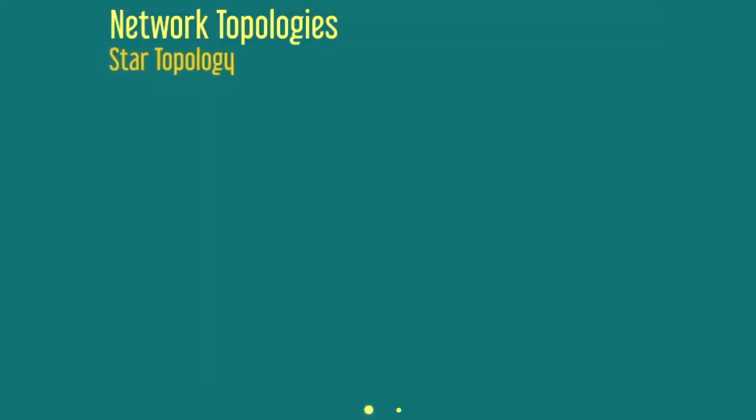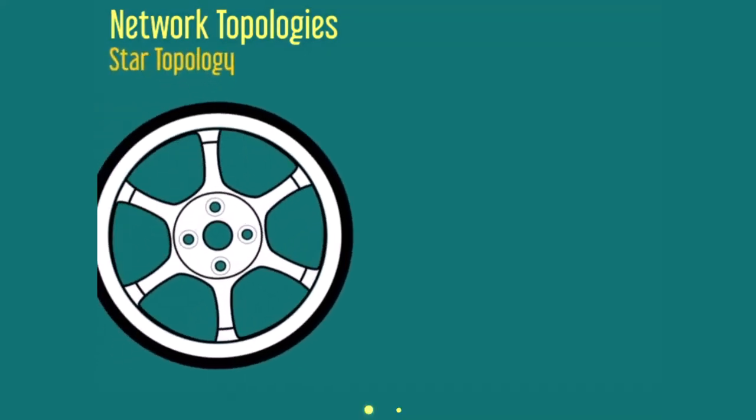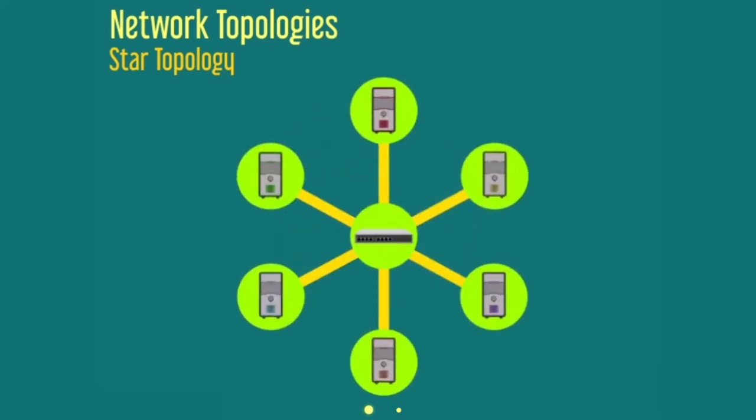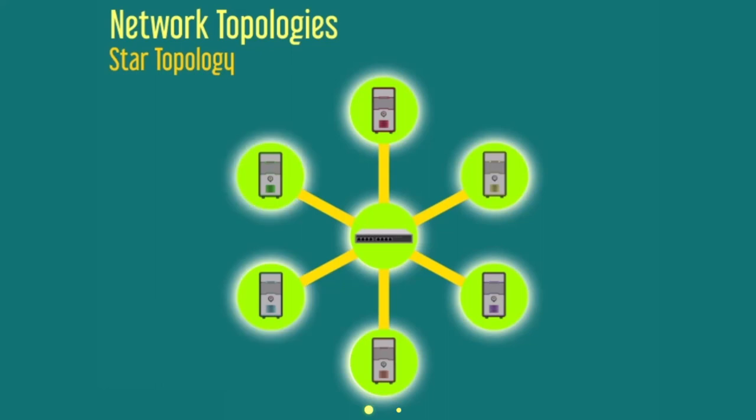Star topology. A star topology resembles the hub of a wheel with spokes extending outward. The hub is the switching device, and the nodes are the spokes.